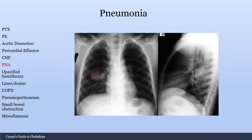This pneumonia here is pretty clear to see, but I'll illustrate a common misconception — this consolidation looks like it's in the middle of the lung, so you might call it a right middle lobe pneumonia. That's why you need the lateral X-ray. If you look at the lateral, it's actually a right lower lobe pneumonia — and I'll explain how that's the case.